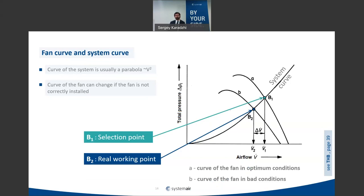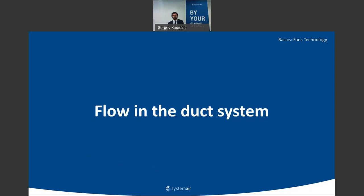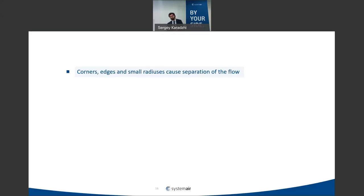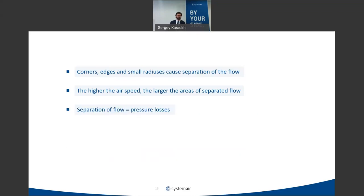Flow in the duct system: the main things that cause losses are corners, edges, and small radii. These can be found in technical handbooks. Higher velocity means larger areas of flow separation and therefore higher pressure losses — losses are proportional to dynamic pressure at that location through a loss coefficient. Any separations entering the fan cause not only pressure losses but also a change in the fan curve.